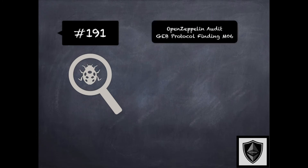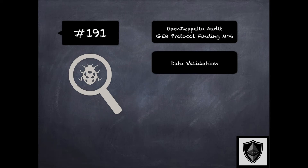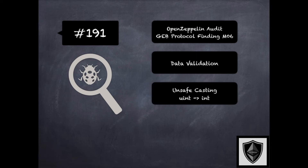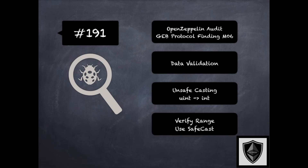Finding 191 is a finding from OpenZeppelin's audit of GB protocol, where the concern was about unsafe casting. For example, one of the contracts used an unsigned integer which was cast to a signed integer and then negated. However, since uint could store higher values than int, it was possible that casting from uint to int may have created an overflow. The recommendation was to consider verifying that values of such unsigned integers were within the acceptable range for signed integer type before casting and negating, and to consider using OpenZeppelin's SafeCast library which provides functions for safely casting between types. This is related to OpenZeppelin's SafeCast in 177 of Solidity 201 module, integer overflow/underflow in 19 of security pitfalls and best practices 101 module, and broader aspects of data validation and numerical issues in 169 and 170 of the 201 module.